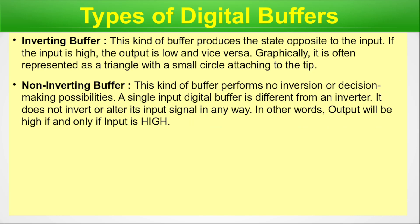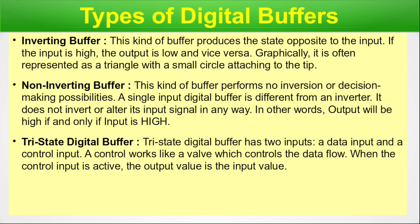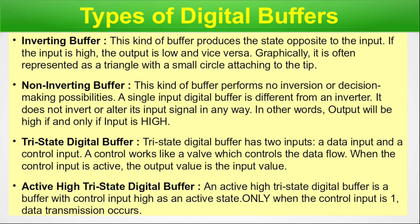Non-inverting buffer: this kind of buffer performs no inversion. A single-input digital buffer is different from an inverter — it does not invert or alter its input signal in any way. The output will be high if and only if the input is high. Tri-state digital buffer: it has two inputs — a data input and a control input. The control works like a valve which controls the data flow. When the control input is active, the output equals the input. Active high tri-state digital buffer: the control input high is the active state; only when control is one does data transmission occur. Those are the four types: inverting, non-inverting, tri-state, and active high tri-state.